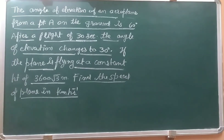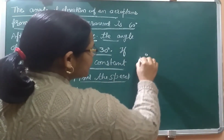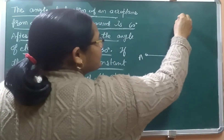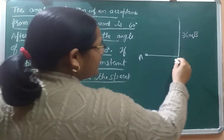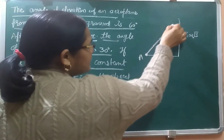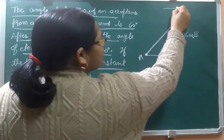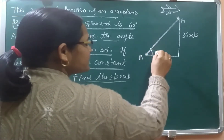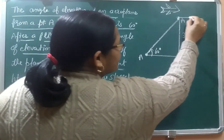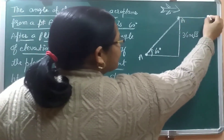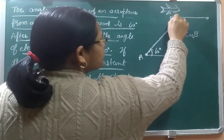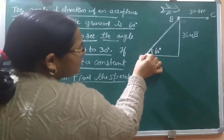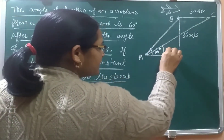According to the statement of the question, the diagram will be formed like this. We suppose a point on the ground. From this point, if we observe an aeroplane at a height of 3600√3 meters, we call this point A. The aeroplane initially makes an angle of elevation of 60 degrees with point A. After 30 seconds, the aeroplane moves from point B to point C, and the angle of elevation observed from point A becomes 30 degrees.